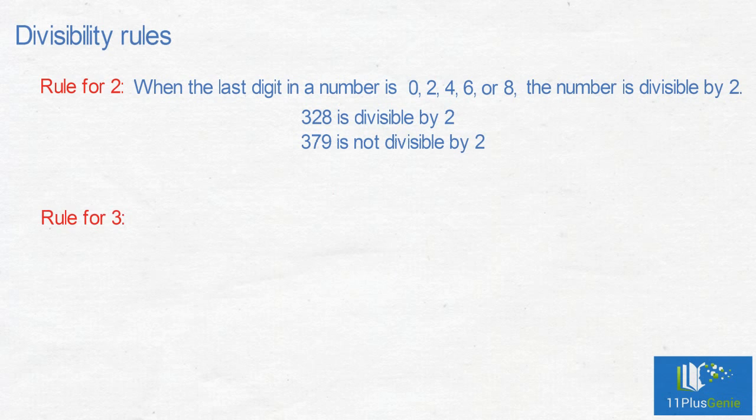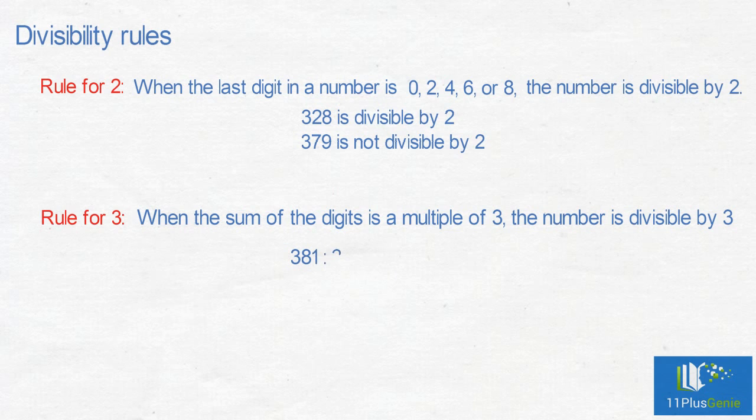Rule for 3: When the sum of the digits is a multiple of 3, the number is divisible by 3. 381: 3 add 8 add 1 equals 12. 12 is divisible by 3, so 381 is divisible by 3.